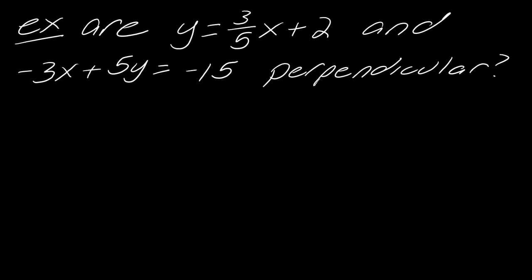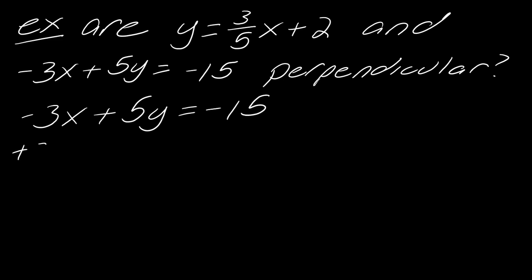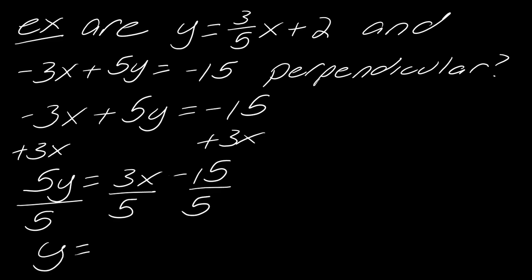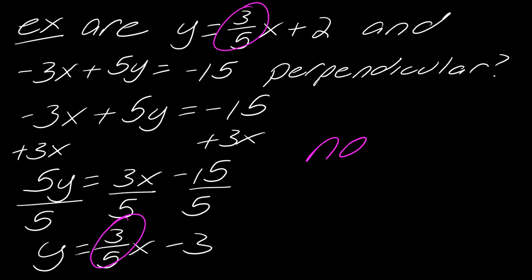So are these two lines perpendicular? The slope of the first line, y equals three-fifths x plus two, is clearly three-fifths. For the second line, negative three x plus five y equals negative fifteen, we solve for y: add three x to each side to get five y equals three x minus fifteen, then divide everything by five to get y equals three-fifths x minus three. Both slopes are three-fifths — not opposite reciprocals — so these are not perpendicular. They are actually parallel.